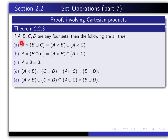Now when you take an element of the left-hand side, the question is: what should you see first? Should you see the Cartesian product, or should you see the union? Well, when you're looking at the left-hand side, you should first see the Cartesian product. This is the Cartesian product of two sets, A with B union C. So a typical element of that would be an ordered pair X comma Y, where X is an element of A and Y is an element of B union C.